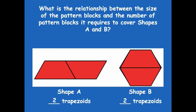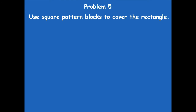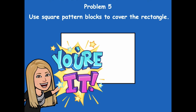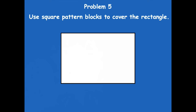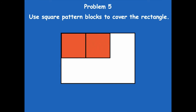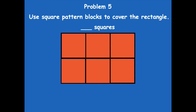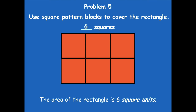Now let's jump to problem five. Use your square pattern block to cover the rectangle — see how many you need. Click play when you're ready to go over it together. When I did this I got one, two, three, four, five, six — it covers it nice and neatly. So the area of the rectangle is six square units. They're called square units because we're measuring in squares.